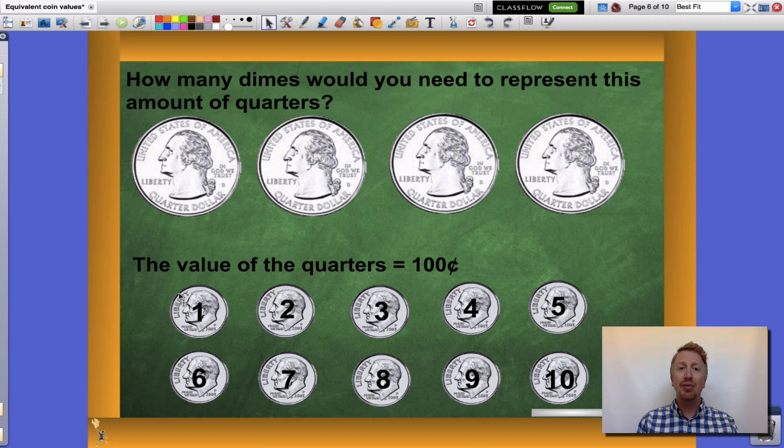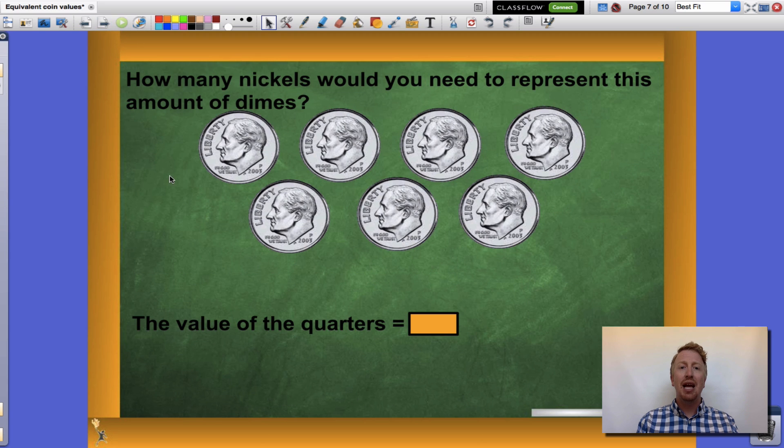Let's look at one last example. How many nickels would you need to represent this amount of dimes? Dimes are worth ten cents a piece and I have seven of them: ten, twenty, thirty, forty, fifty, sixty, and seventy. I have a total of seventy cents.